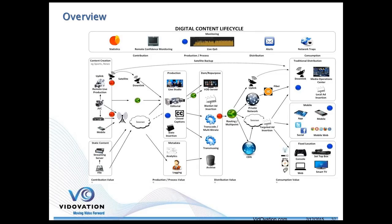Here's an ecosystem slide. For content creation, a JVC camera can talk directly to the internet or cloud using a cellular modem or Wi-Fi with Zixi, or talk to one of our encoders with Zixi. There could be content capture from a mobile device, or the traditional method of pushing to satellite — and we can add Zixi robustness to the satellite link. So we have a traditional path combined with the unmanaged internet path.